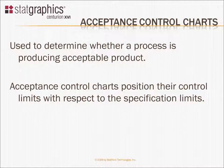An acceptance control chart is different. It's used to tell you whether or not you're producing an acceptable product. It does that by positioning its control limits not with respect to the process mean, but with respect to the specification limits. Assuming you have an upper and lower specification limit, the control limits are placed somewhat inside of the specification limits, and you get an alert only if a point comes too close to the specification limits.